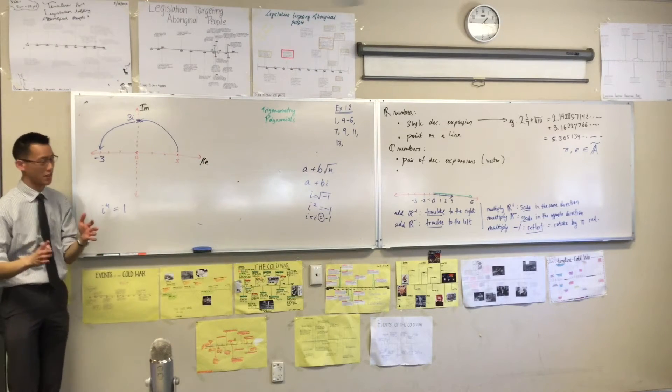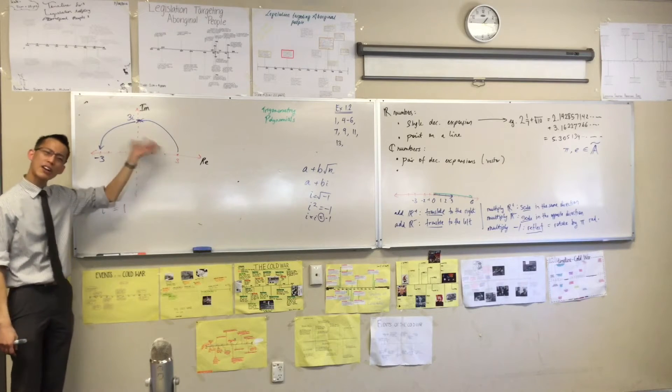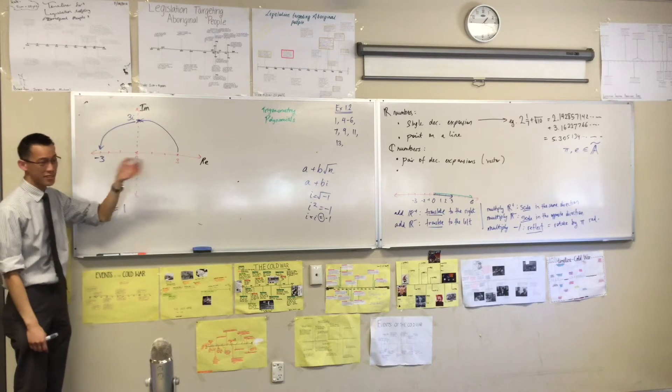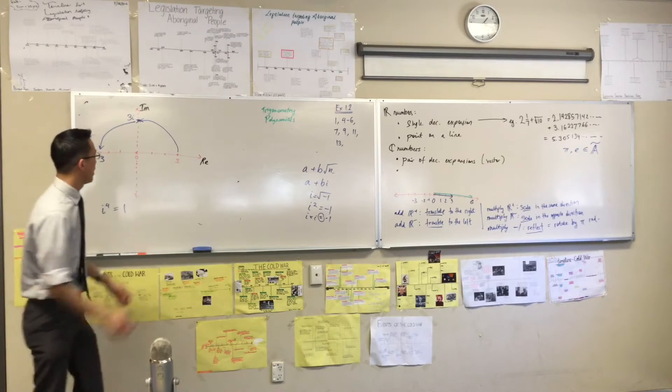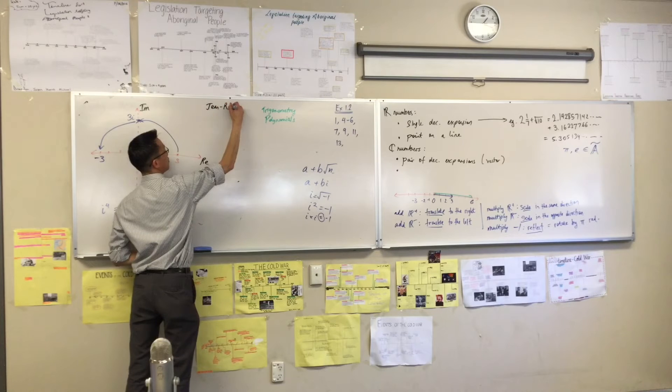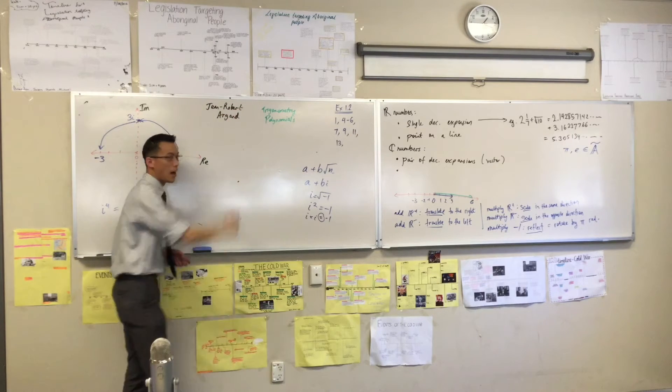These things are very similar to each other. The Cartesian plane and this thing. I call it the complex plane, but just like the Cartesian plane, it has a name that's attached to a French mathematician. His name was Jean-Robert Argand.